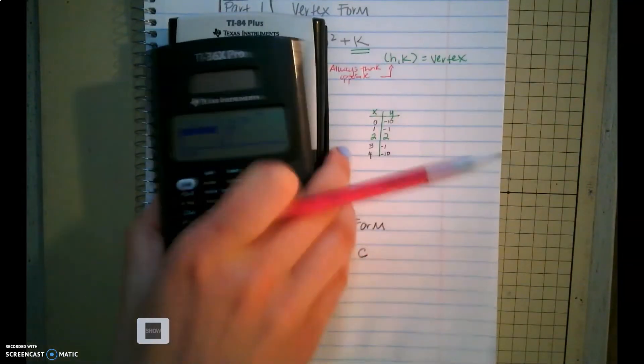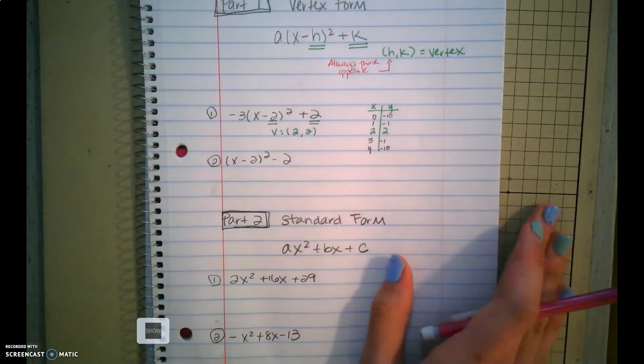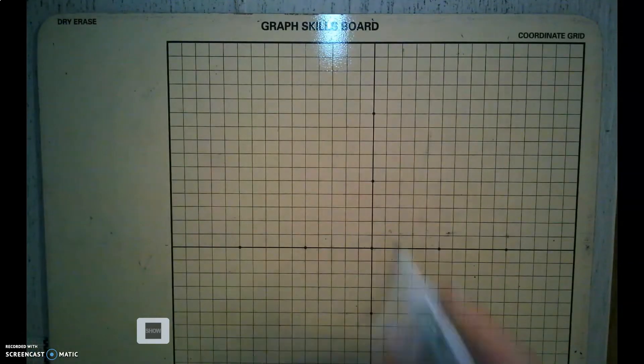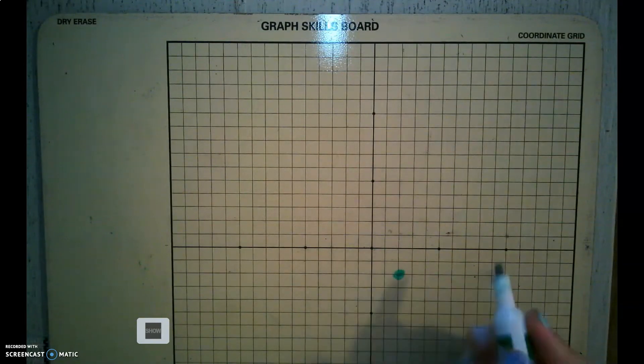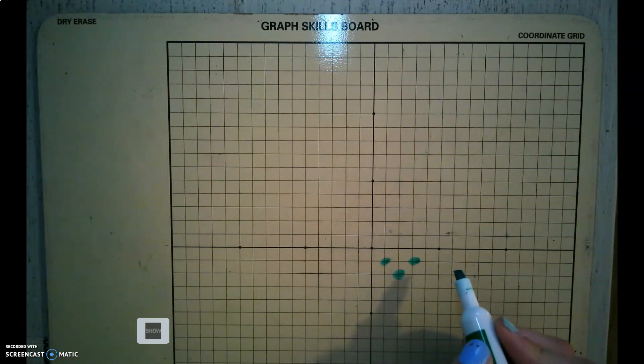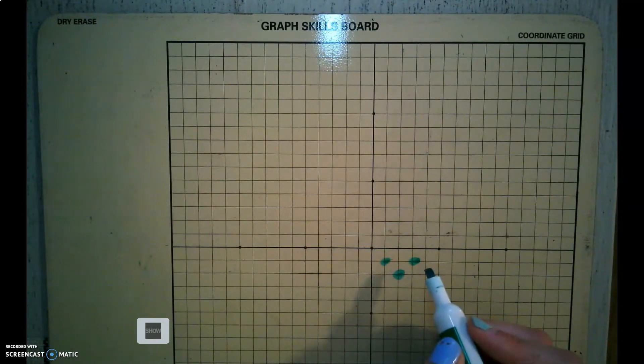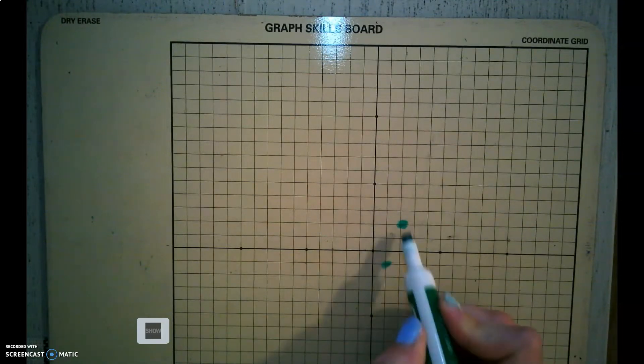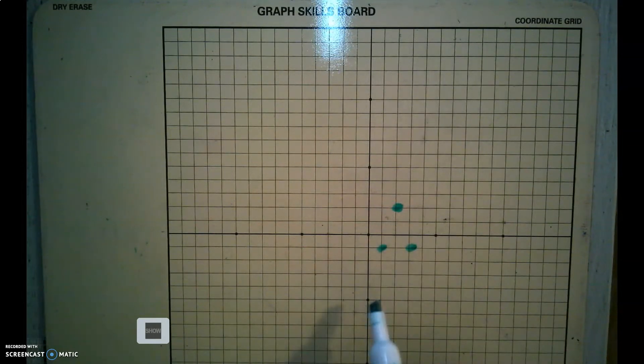So now that we have our table, we're able to graph it. We're just going to plot our points on our graph. Sorry, I just dropped my calculator. So I'm going to plot 2, 2. I'm going to plot 1, negative 1, 3, negative 1. And I'm going to plot 0, negative 10 and 4, negative 10.